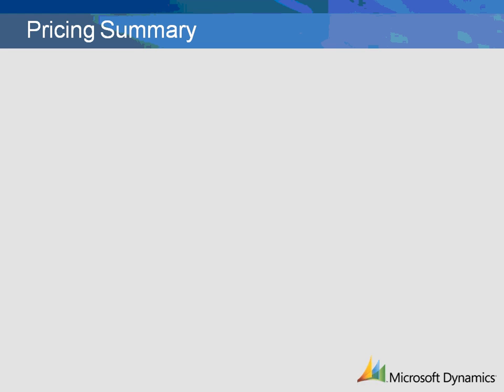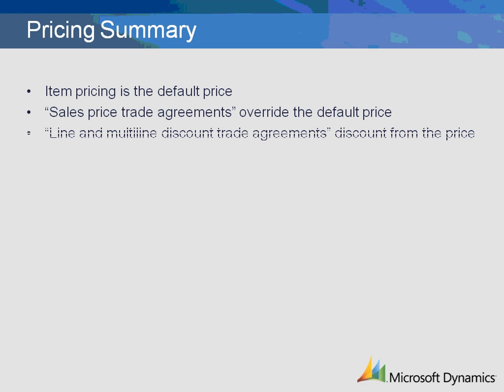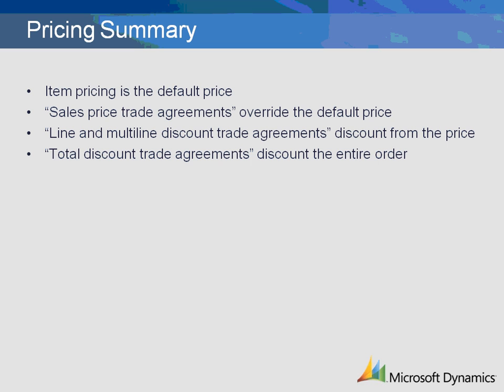To summarize the pricing options in Microsoft Dynamics AX: item pricing is the default price. Sales price trade agreements will override the default price. Line and multi-line trade agreements discount from the price — they will discount from the trade agreement price if a trade agreement exists; otherwise, they discount from the default price. Total discount trade agreements discount the entire order. Manual pricing overrides all other pricing during data entry.